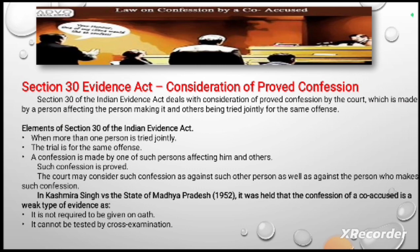Section 30 of the Indian Evidence Act deals with the consideration of a proved confession by the court, which is made by a person affecting the person making it and others being tried jointly for the same offense. The elements of Section 30 are: when more than one person is tried jointly, the trial is for the same offense, a confession is made by one of such persons affecting him and others, and such confession is proved. The court may then consider such confession against the other persons as well as against the person who made the confession.